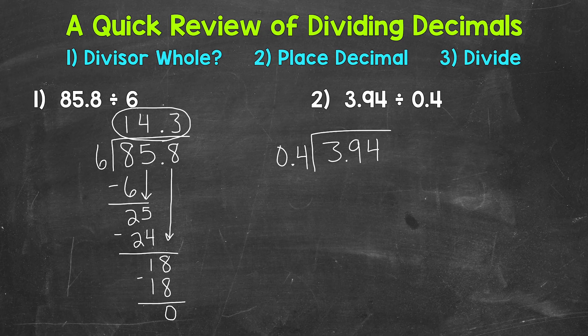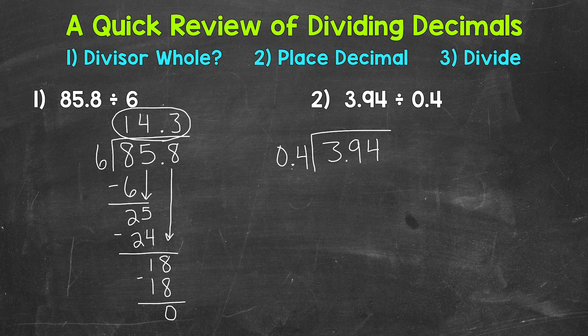If our divisor is not whole, we need to make it whole. Making the divisor a whole number gives us the ability to go through our division steps, and it's going to place our decimal for us in our answer. It's pretty cool how this works out. In order to make our divisor whole, we need to move the decimal once to the right, which means we are multiplying it by 10. So let's move this decimal once to the right.